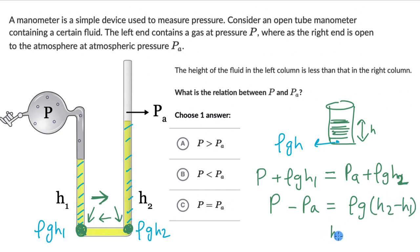And we already know that H2 is greater than H1, which means this is a positive number. If P minus PA is a positive number, then that means that P must be greater than PA.